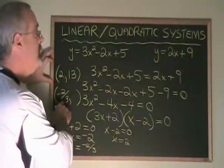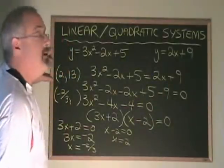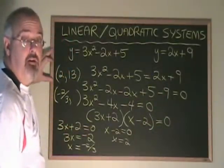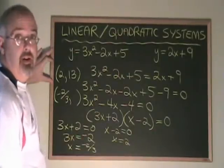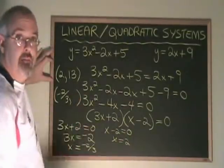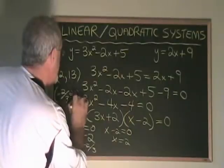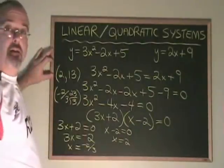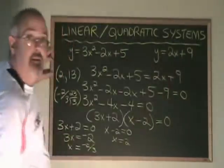If I plug negative 2 thirds into this x position, I get y equals 2 times negative 2 thirds plus 9, y equals negative 4 thirds plus 9, y is therefore equal to 7 and 2 thirds. If I write that as an improper fraction, it's 23 thirds. This is how you solve for the points of intersection between a quadratic and linear system.